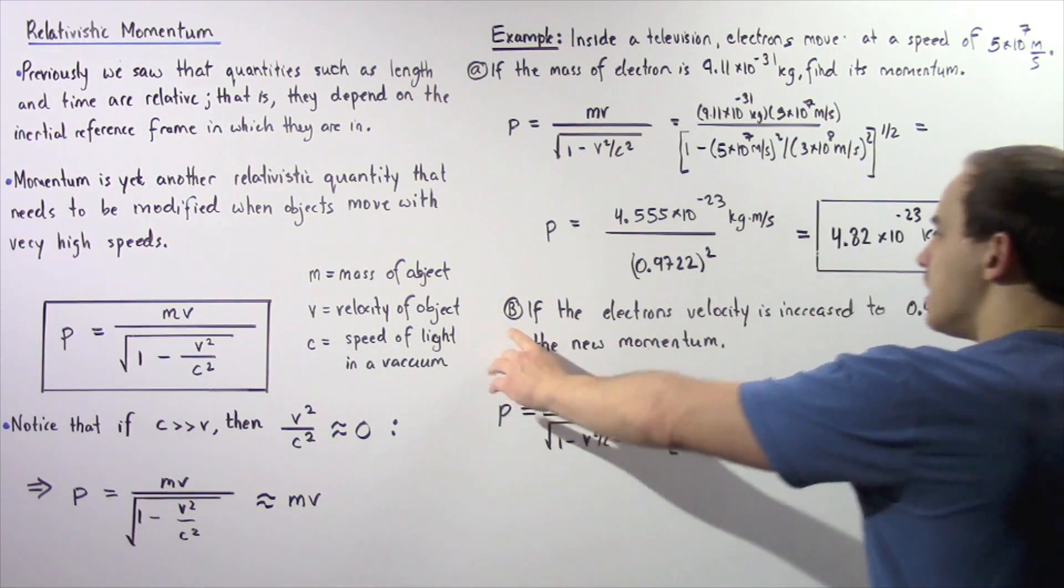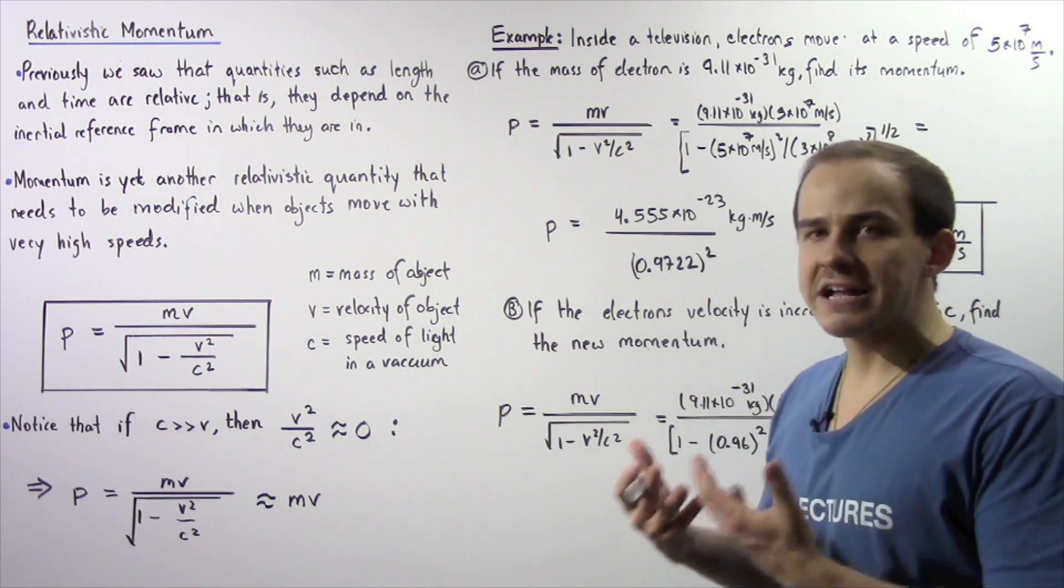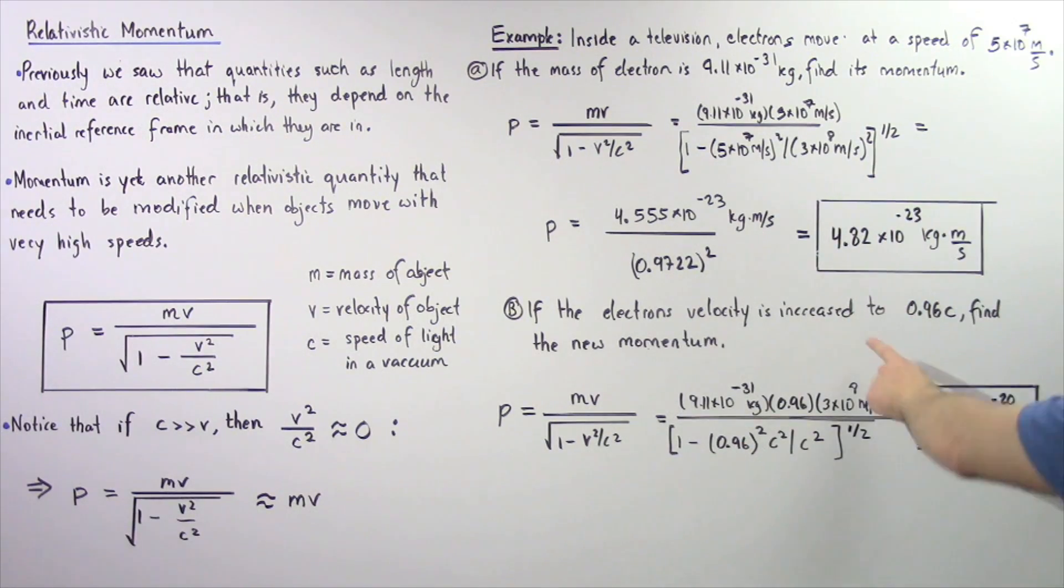Let's move on to part b. If the electron's velocity is increased by, let's suppose, some type of electron accelerator to a velocity of 96% of the velocity of light, find the new momentum of this electron.